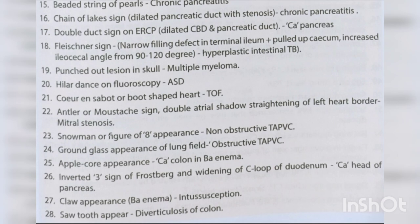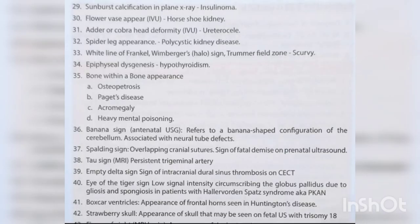Apple core appearance — carcinoma colon in barium enema. Inverted tree sign of Frosberg and widening of C-loop of duodenum — carcinoma head of pancreas. Claw appearance barium enema — intussusception. Sawtooth appearance — diverticulosis of colon. Sunburst calcification on plain X-ray — insulinoma. Flower vase appearance — horseshoe kidney.